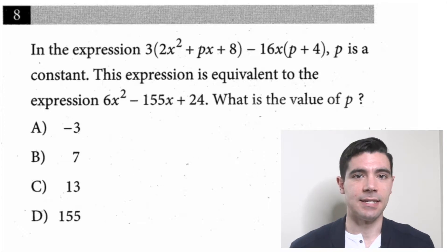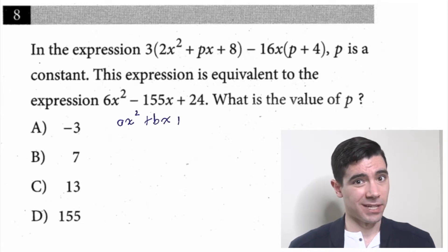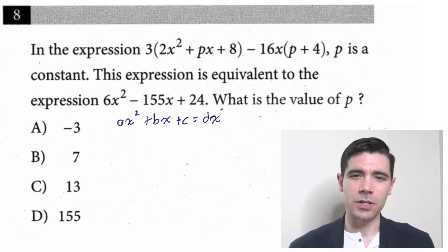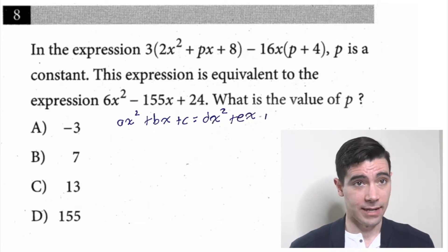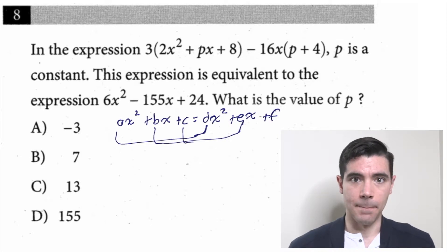It's a pretty common question type on the PSAT and SAT. Basically, you can think of it this way. If I had a quadratic expression that said ax² + bx + c, and that were equal to dx² + ex + f, then these corresponding coefficients, or in the last case constants, would have to be equivalent. a would equal d, b would equal e, and c would equal f.